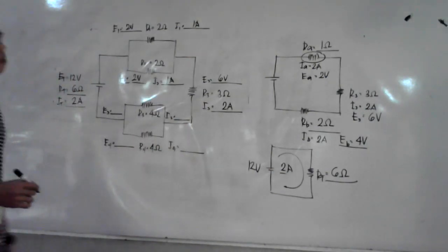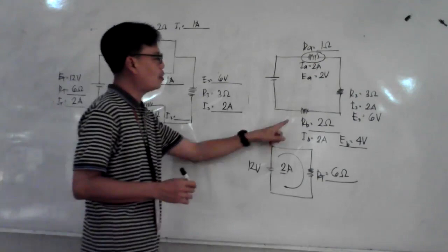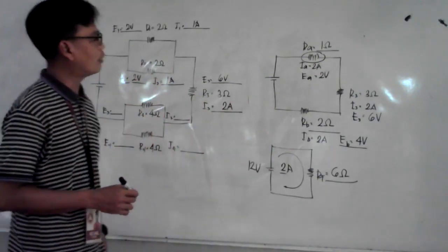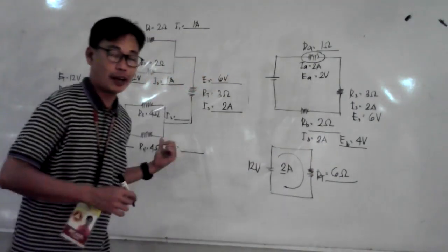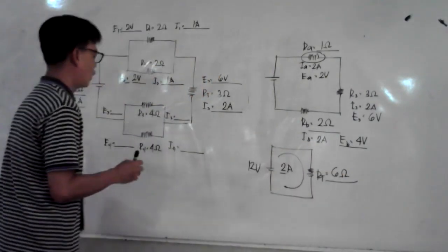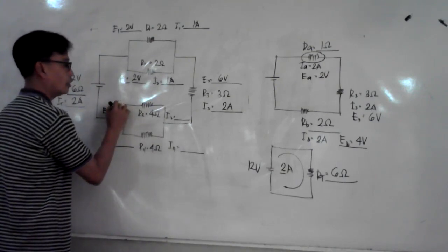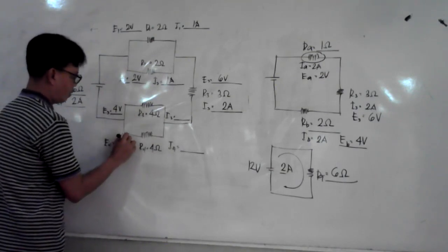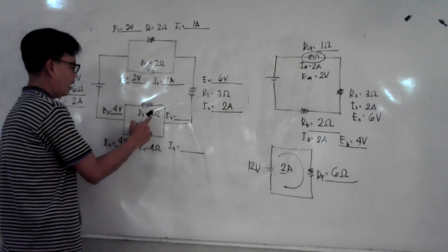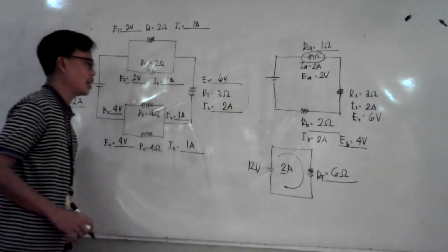Now for the last part, Rb. Rb splits into 2, R3 and R4. They are connected in parallel. Whatever the voltage in Rb is the voltage in R3 and R4. That is 4 volts, so R3 is 4 volts and R4 is 4 volts. You can solve for their currents: E over R. That is 1 ampere here and 1 ampere here.